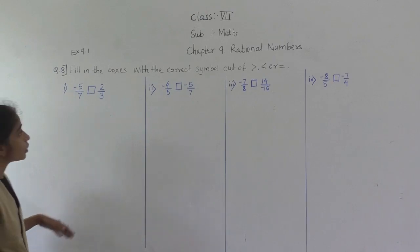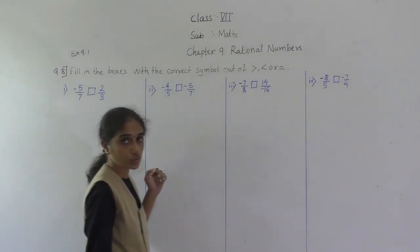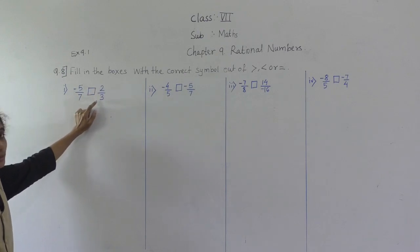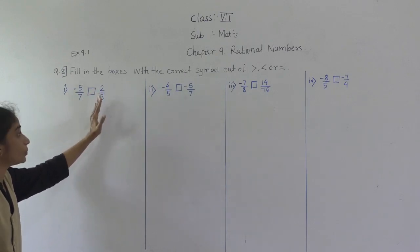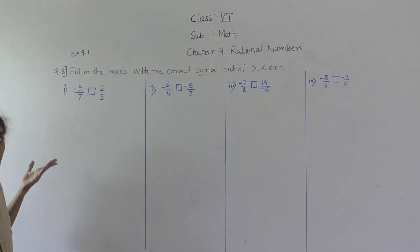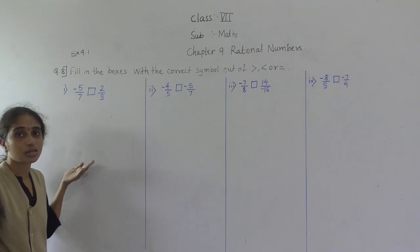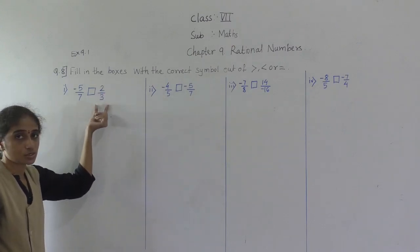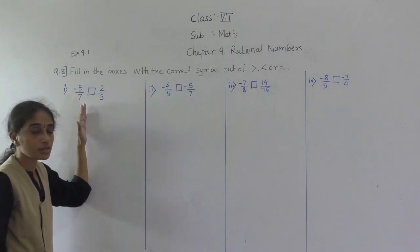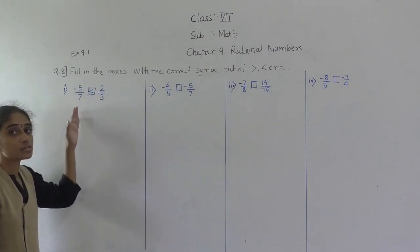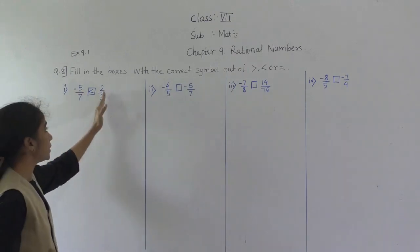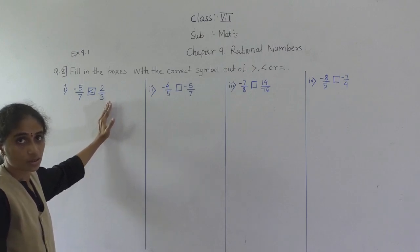Let's solve question number 8: fill in the boxes with the correct symbol — less than, greater than, or equal to. First example: minus 5 upon 7 and 2 upon 3. Since minus 5 upon 7 is negative and 2 upon 3 is positive, the negative number is always smaller than the positive number. So minus 5 upon 7 is less than 2 upon 3.